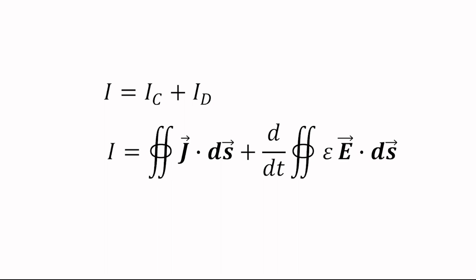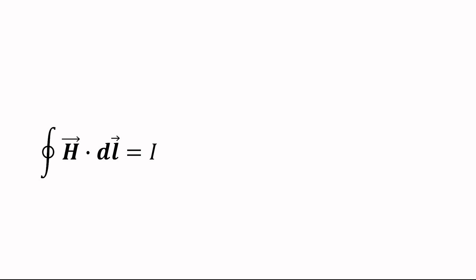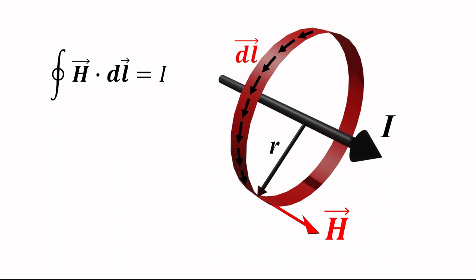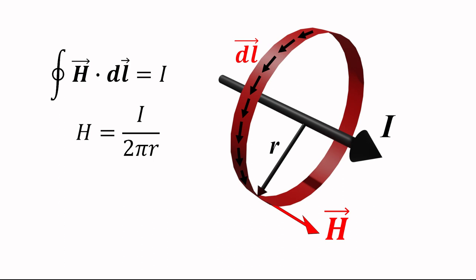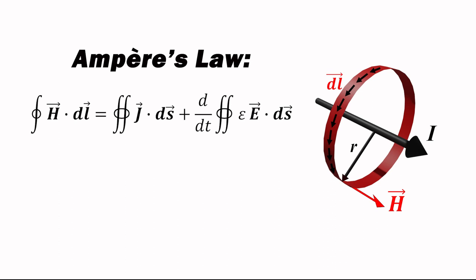In a conductor, the first term dominates, and in a dielectric, the second term dominates, but the point is that a magnetic field will be generated by any type of current. That brings us to the left side of Ampere's law, which states that the magnetic field intensity integrated over a closed contour is equal to the total current passing through the surface bounded by the contour. Assuming a long current-carrying element, we can define our contour to be a circle of radius r with the current at the center. Then the integral becomes H multiplied by the circumference 2πr. Solving for H, we get current divided by 2πr. For a current of 1 ampere and a circumference of 1 meter — a radius of 1 meter divided by 2π — we have a magnetic field intensity of 1 ampere per meter. The units tell you that magnetic field is directly related to current. The basic message is that a current creates a magnetic field, and this equation gives you a tool for quantifying it.